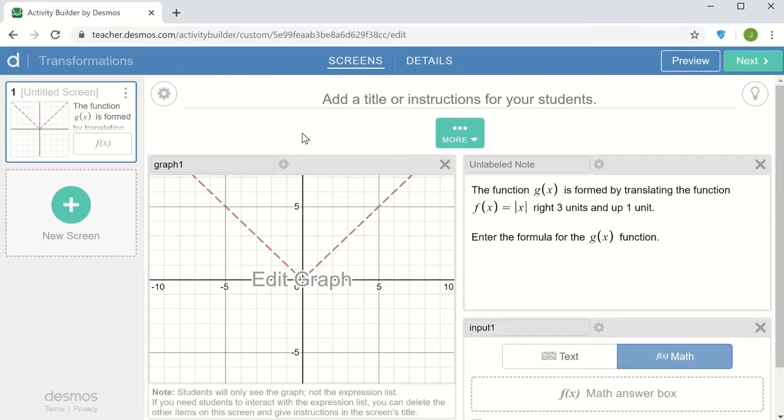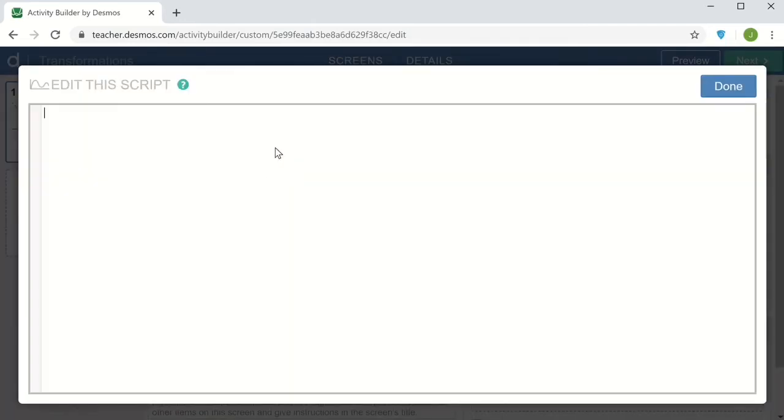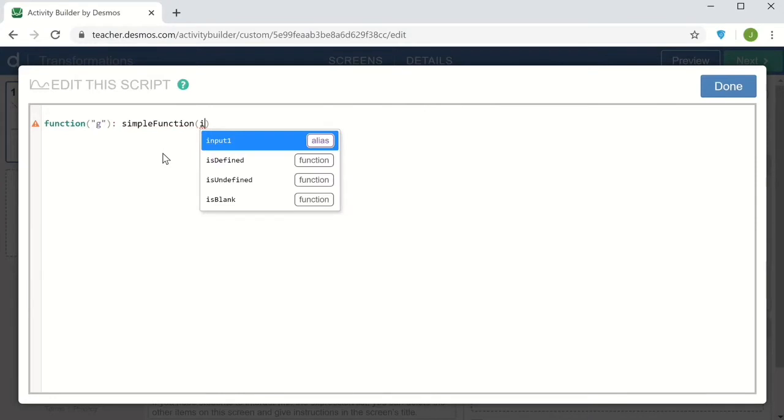And now I'd like to connect the graph with the input component and graph the formula that the student types in there. So to do that, I'm going to click on this little gray gear, which takes me to the computation layer script. And we're going to define a function and call it g. Ending that with a colon. And the function is created with the command simple function. And we can get the input by accessing input one dot LaTeX.